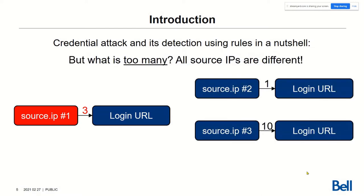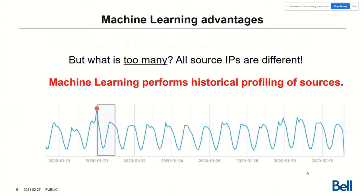However, what is "too many"? For source IP one, three is too many, while for source IP three, ten is just right if this is a public IP shared by a lot of customers. This is when machine learning comes in handy, because it performs historical profiling of sources. Here you can see how the Elastic machine learning component detected an anomaly — this dot in red. The color of the anomaly corresponds to the severity of the deviation from the norm: from green being slightly abnormal, through yellow and orange, to red meaning severe deviation.